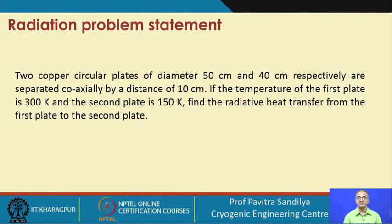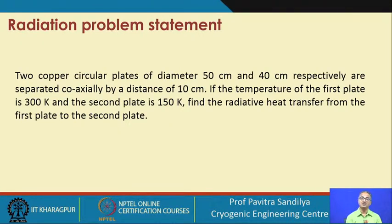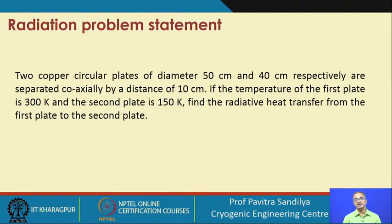Note that 300 K is about 27°C, whereas 150 K is well below 0°C — it is negative on the centigrade scale. So there is a very large temperature difference between the plates, and there will be significant radiative heat transfer between them. We are neglecting convective heat transfer and also neglecting the presence of any gas medium between the two plates.